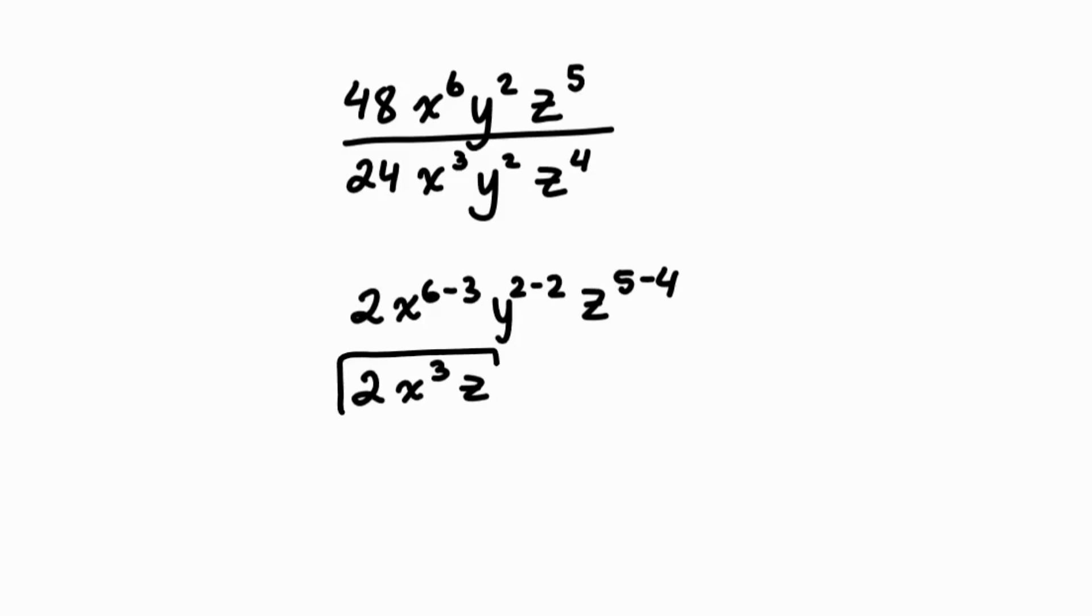This is the simplest form of the above rational expression. We still need to state the restrictions, though, because there are certain values of x, y, and z that will make your denominator 0. So if I take each value in the denominator and set it to 0,